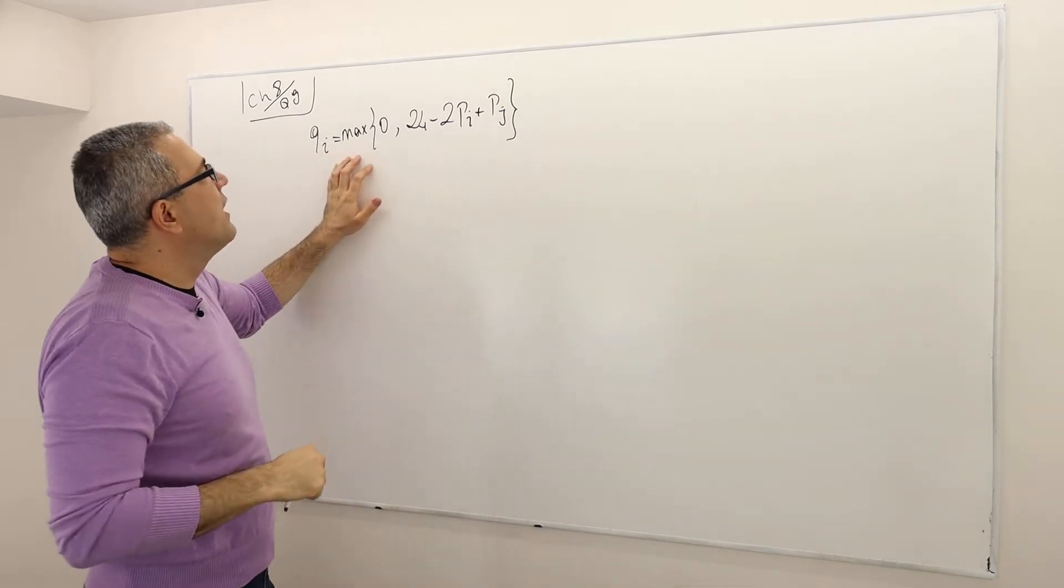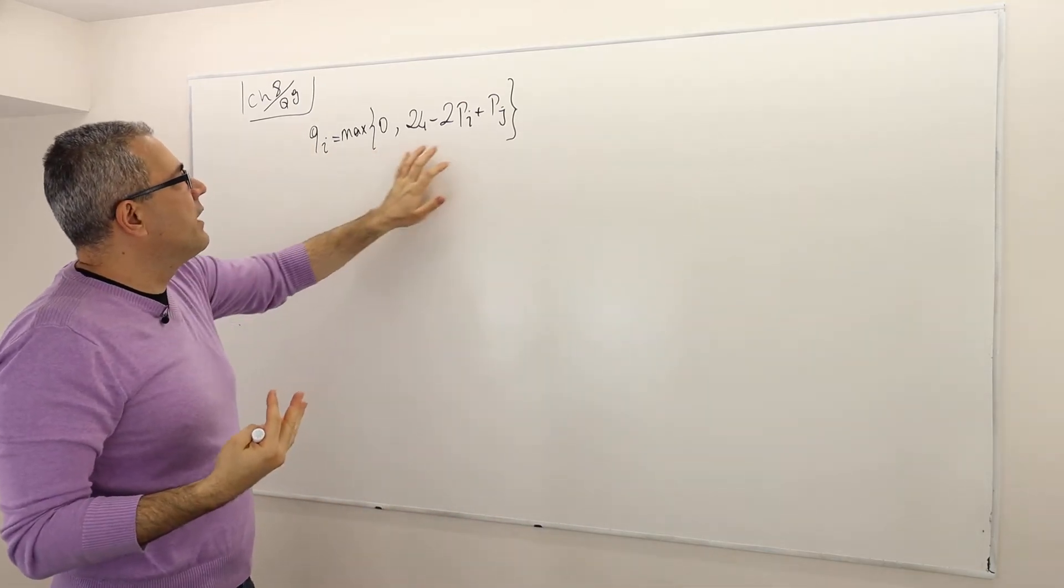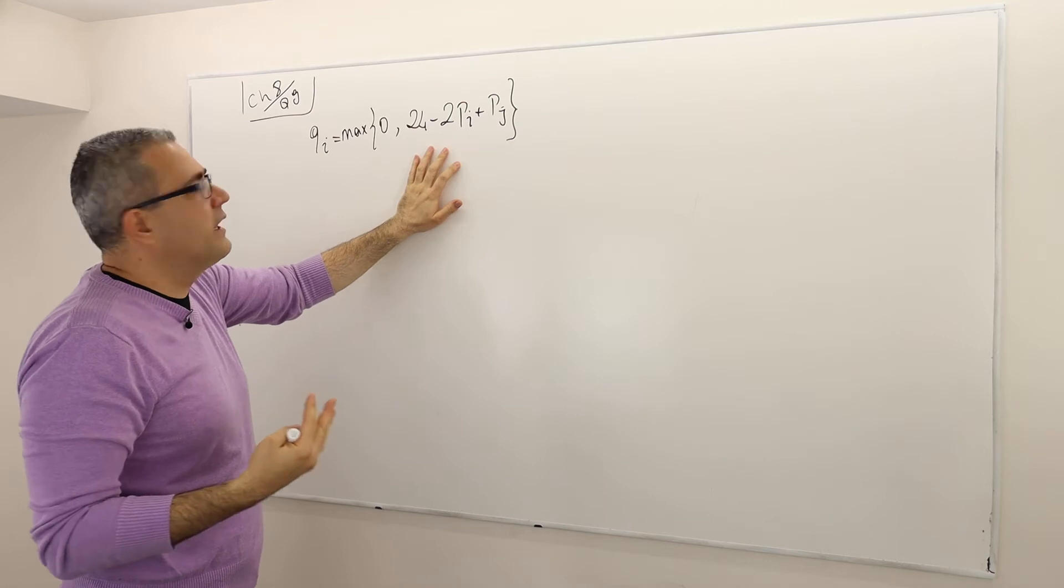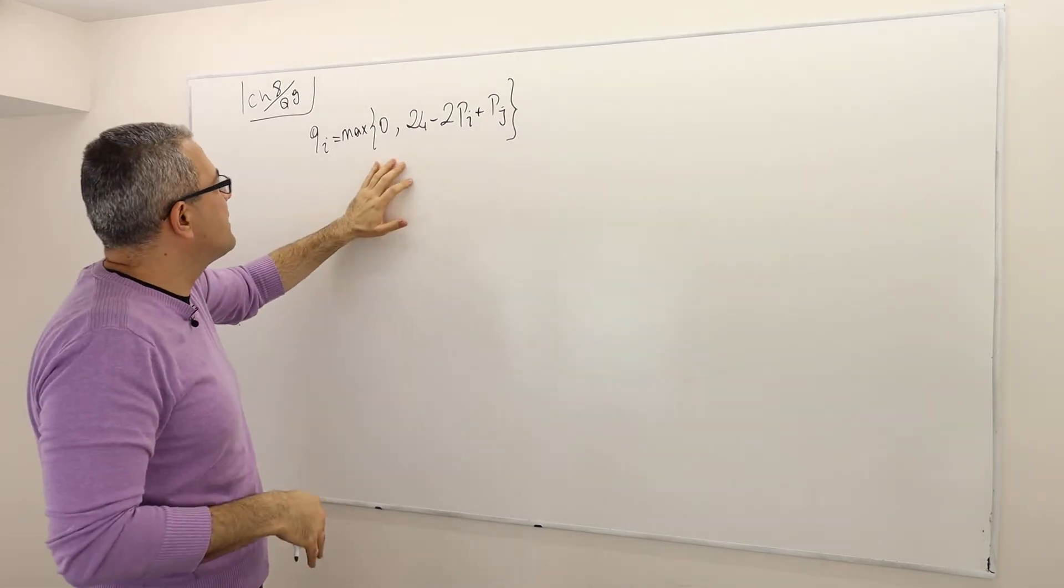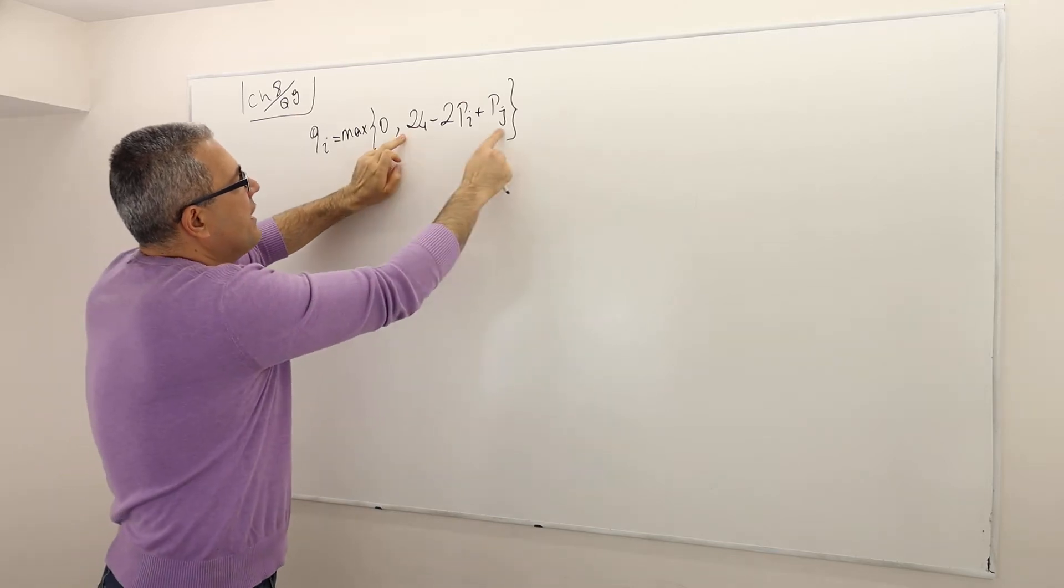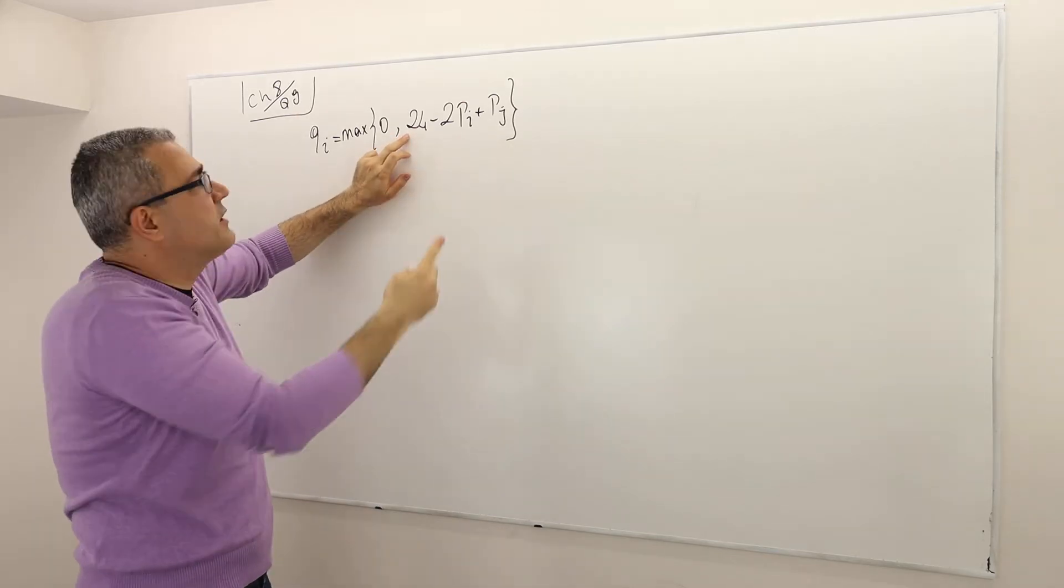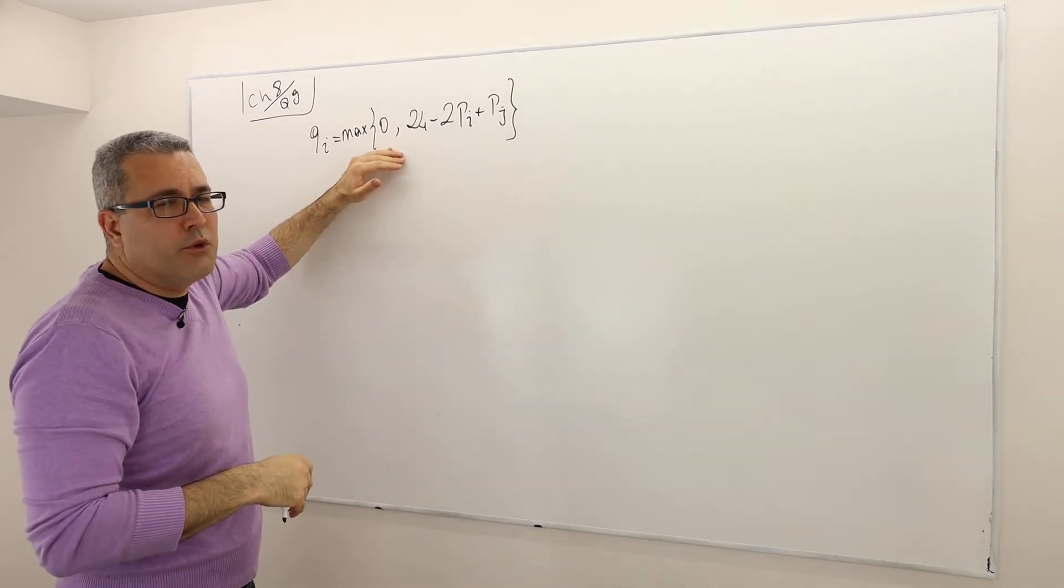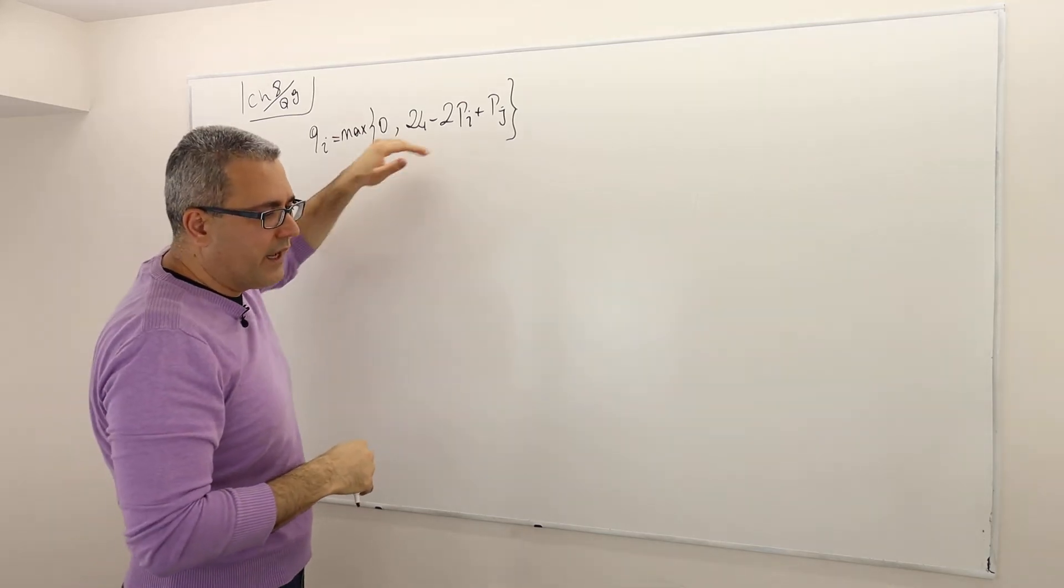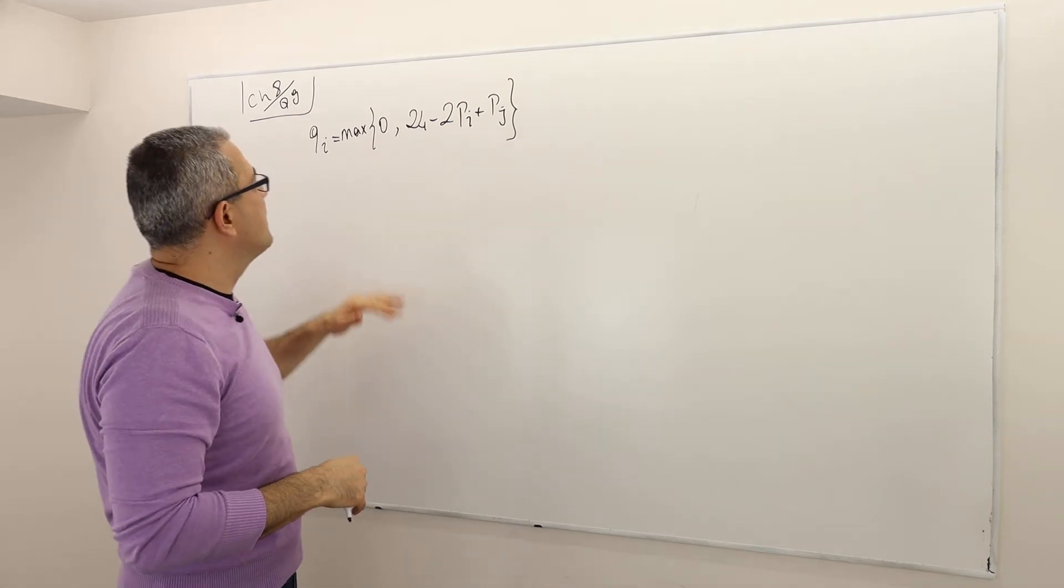Why do we have max? The idea is basically the following: you will never produce negative quantities, right? It makes no sense. So therefore, if this thing is negative, which is possible if pi is very high, for example, then you are actually going to produce 0 units rather than negative units.